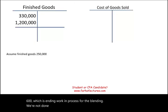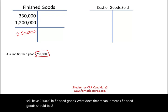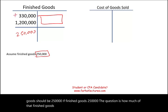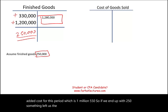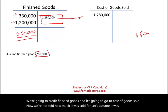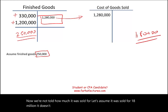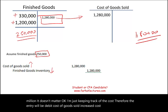After counting, ending finished goods inventory is $250,000. Starting with $330,000 beginning balance plus $1,200,000 transferred in gives $1,530,000 available — but we said the period costs add to $1,550,000 total. If the ending balance is $250,000, the difference of $1,250,000 left as cost of goods sold. We credit finished goods $1,250,000 and debit cost of goods sold $1,250,000, completing the cost flow.